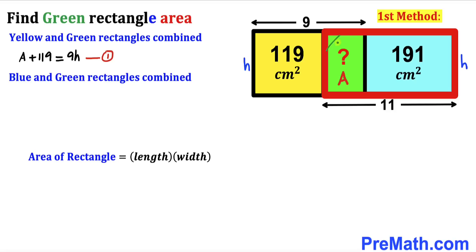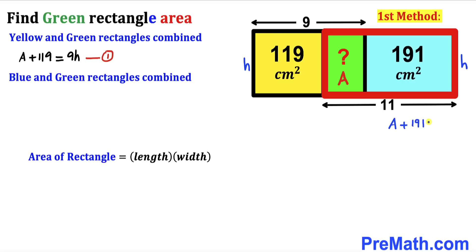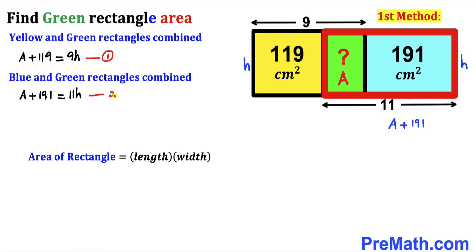Now let's focus on the blue and green rectangles combined. Their combined area is a plus 191. Using the same area formula, the dimensions are 11 and h, so we can write: a + 191 = 11h. We'll label this equation number two.